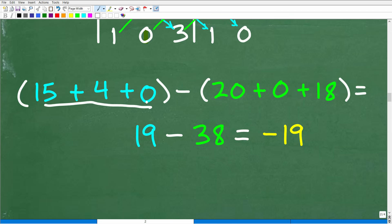We have 15 plus four plus zero, that's 19. We're going to subtract that from the sum of these products - 20 plus zero plus 18, that's 38. 19 minus 38 is negative 19. Just be careful with those negative signs. But that is it.